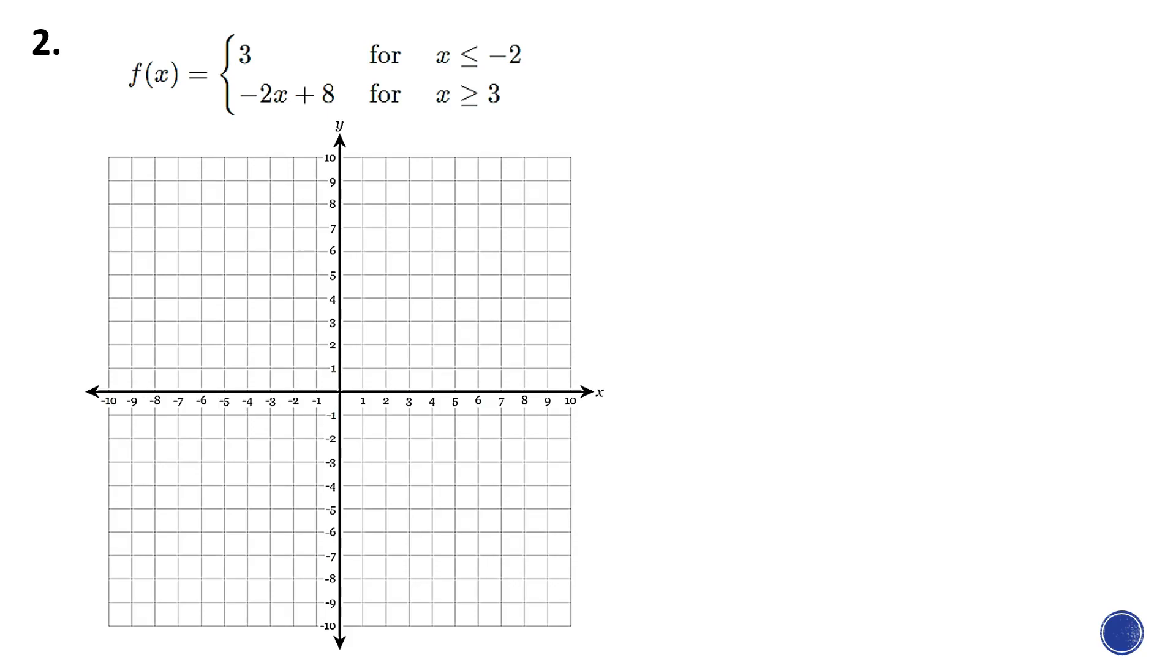Example number two of graphing piecewise functions. Here we have f(x) = 3 for x ≤ -2, and then -2x + 8 for x ≥ 3.